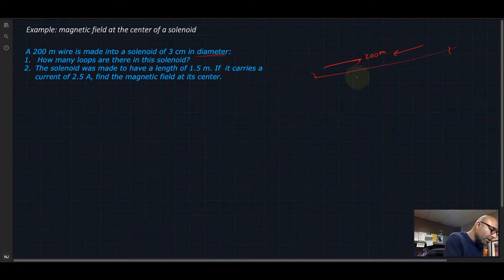The solenoid is made out of loops that are next to each other, and each one of them has a diameter of 3 centimeters. This means that the radius is 1.5 centimeters.